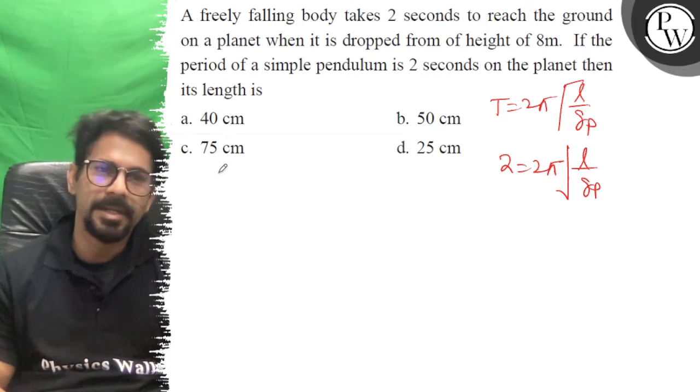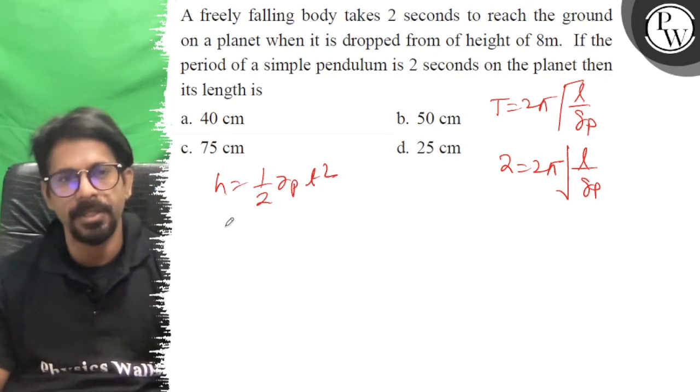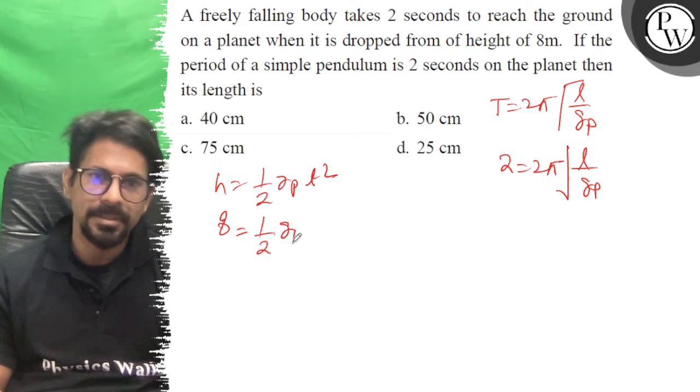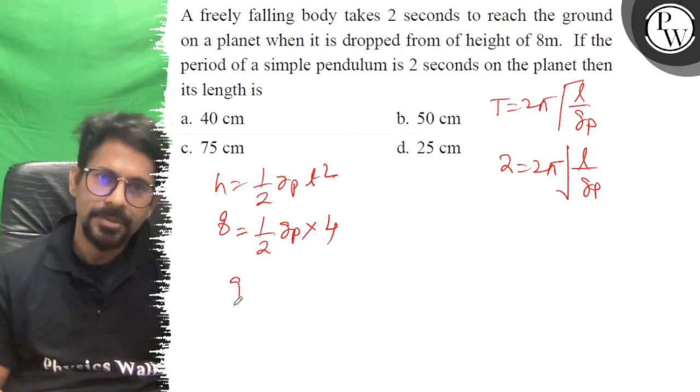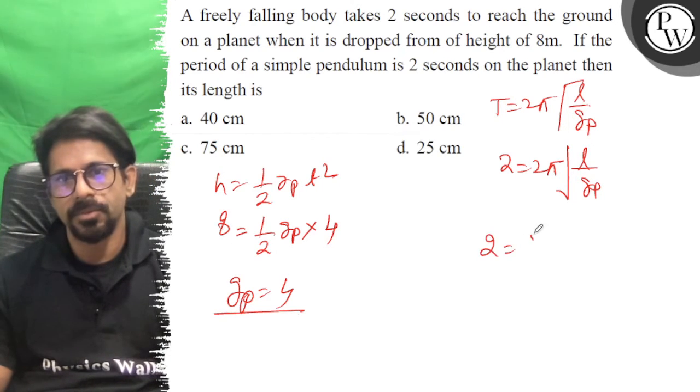Now we need to find g planet. Using h equals half g planet times t squared for the freely falling body, where h is 8 meters and t is 2 seconds, we get g planet equals 4.